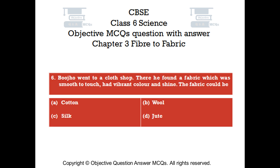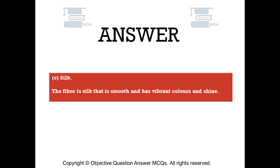Question number 6. Buiho went to a cloth shop. There he found a fabric which was smooth to touch, had vibrant color and shine. The fabric could be — Option A: cotton. Option B: wool. Option C: silk. Option D: jute. The right answer is option C — silk. The fiber is silk, which is smooth and has vibrant colors and shine.